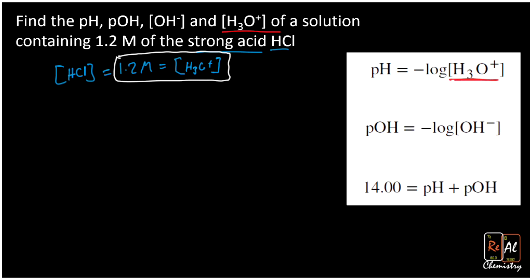So pH is equal to the negative log of my H3O+ concentration, which is equal to negative log of 1.2 molar. That actually gives me a pH of negative 0.079.